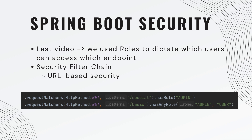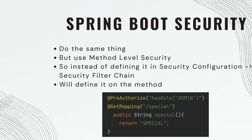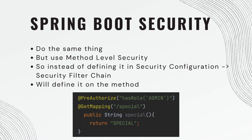We had a request matcher and said, for this endpoint, who has access? In today's video, we're going to do the exact same thing, but instead of defining it in the security configuration on the security filter chain, we're going to use method level security — defining it on the method itself.